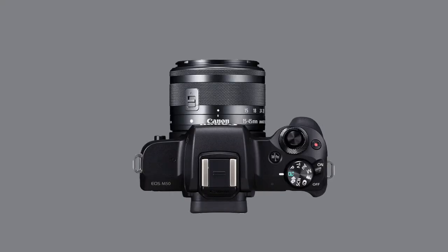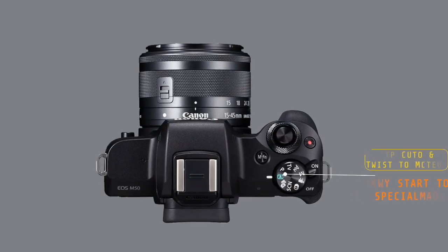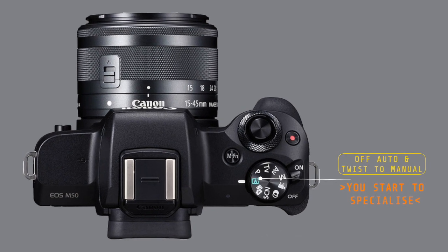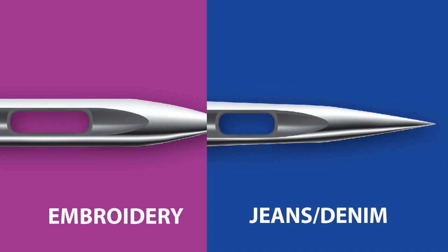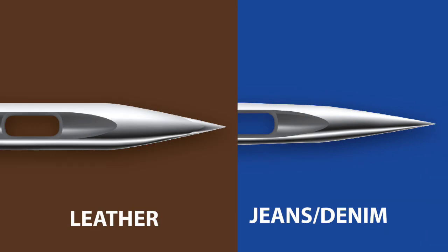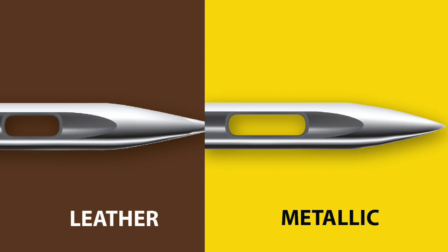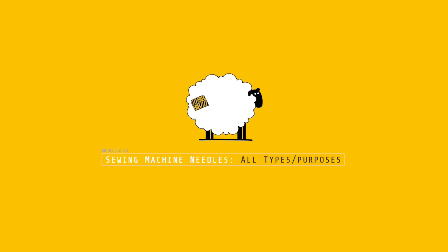But after a while of taking pictures on auto, you start to experiment with settings to improve your skills and up your game as a photographer. I'm starting to play around with the ISO, white balance and other camera settings. The same is now happening with my sewing — if you really want to improve, choose a specific needle type for the purpose or project. I don't use universal needles anymore. Here's the lowdown on all the needle types and how the points and eyes differ for specific purposes and projects.